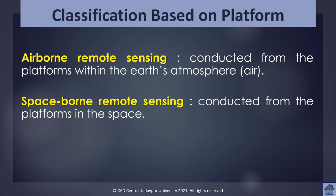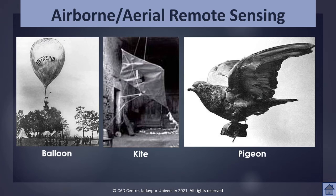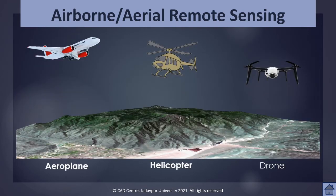Different aerial platforms include balloons, kites, pigeons, and aircraft. Balloons, kites, and pigeons are early platforms of remote sensing and are currently not used. Aircraft are the main aerial platforms. In remote sensing, aircraft are primarily fixed-wing aeroplanes, although helicopters and drones are also used, and especially drones are nowadays becoming very popular.